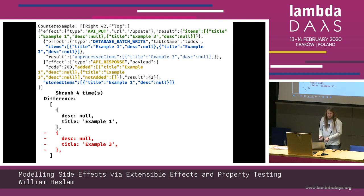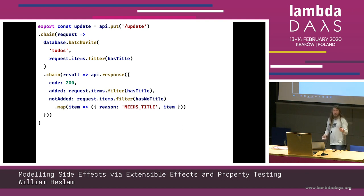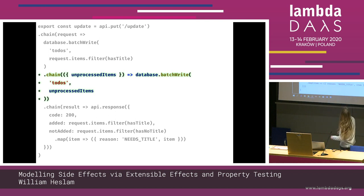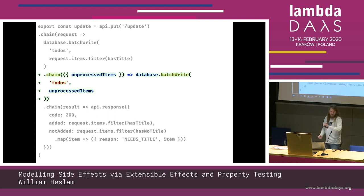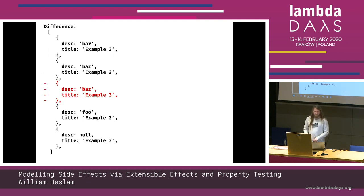Let's fix this. We add an extra chain saying: if you failed the first batch write, just do it again — with the unprocessed items. If you did it with the original items, you'd have duplicates in your database. We run the tests again and — oh no, it's made it worse, there are more things now. FastCheck has found a scenario where enough items were sent from our hypothetical user that two batch writes one after another still couldn't handle everything. The first wrote all but two, the second was called with those remaining two and only wrote one of them.